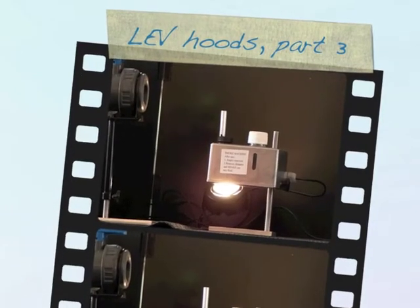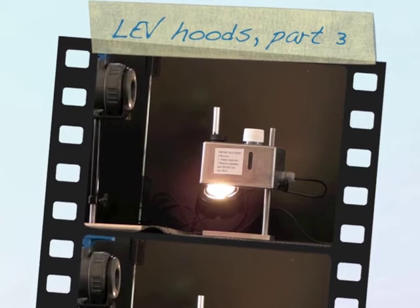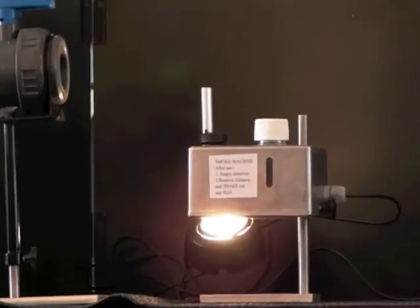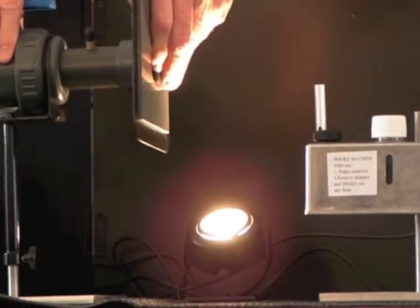The second, the next sort of hood in our list is the enclosing hood. So in the enclosing hood, the process takes place inside the hood, and the job of the hood is to stop it escaping.